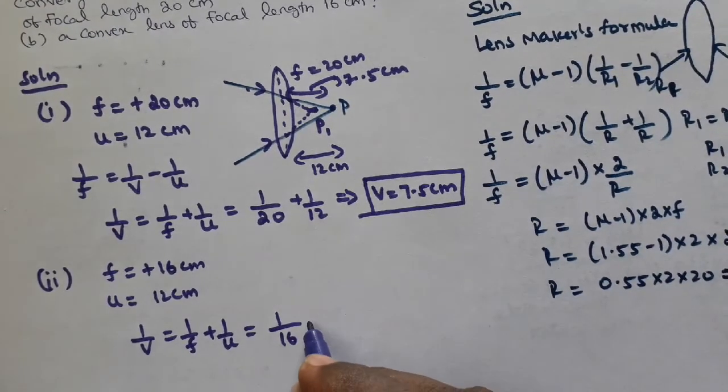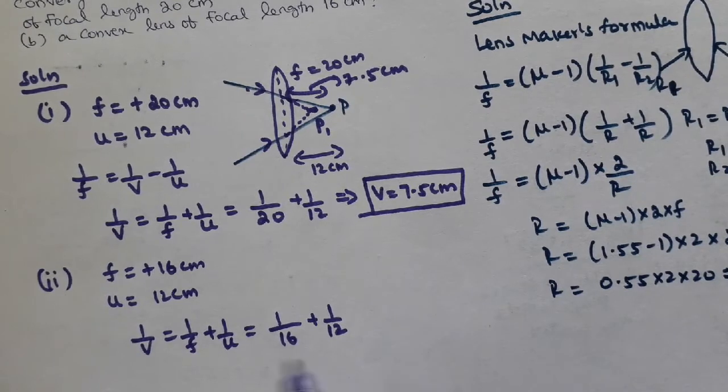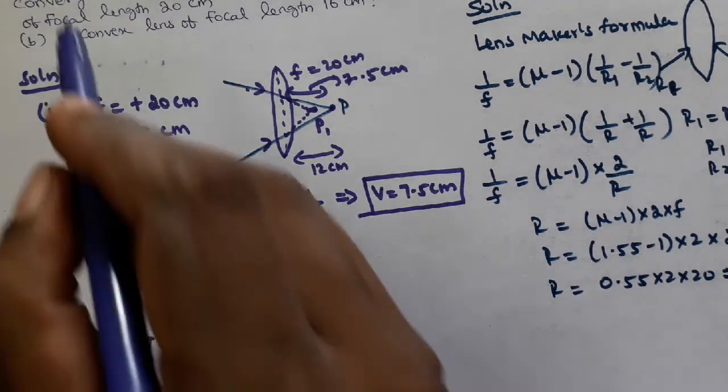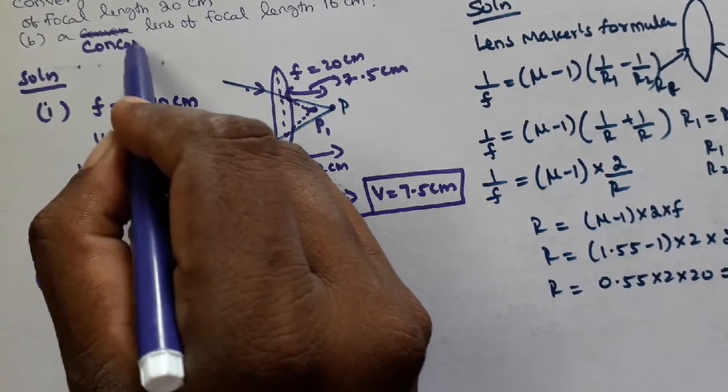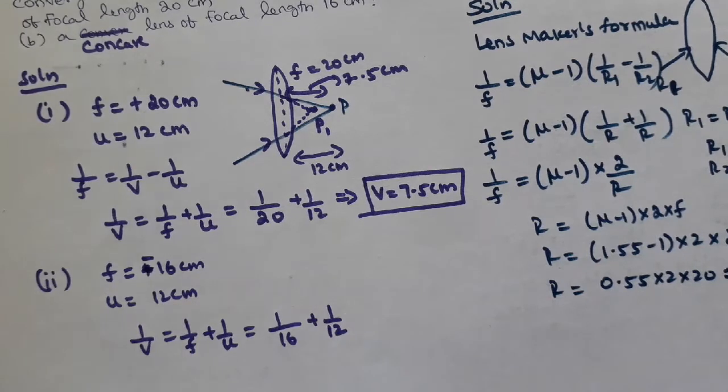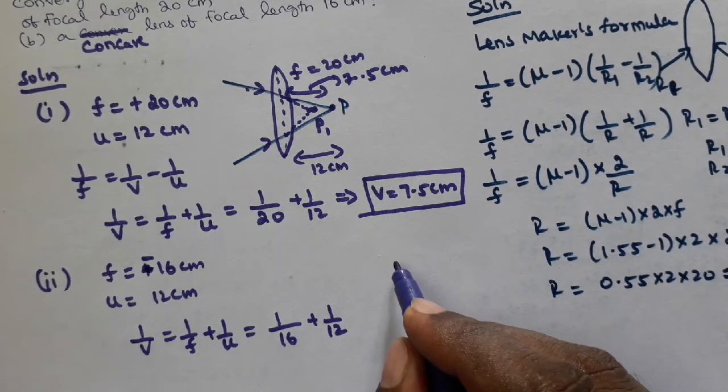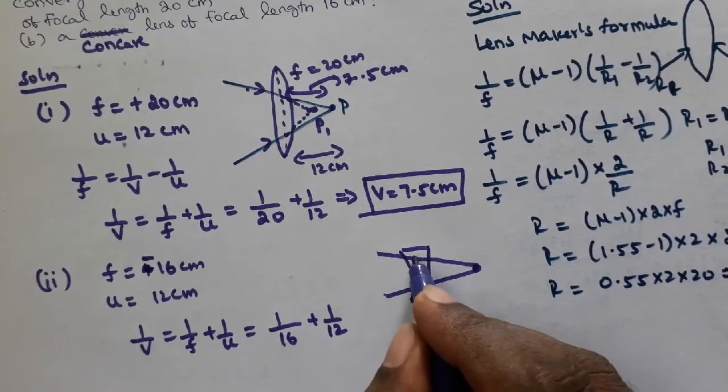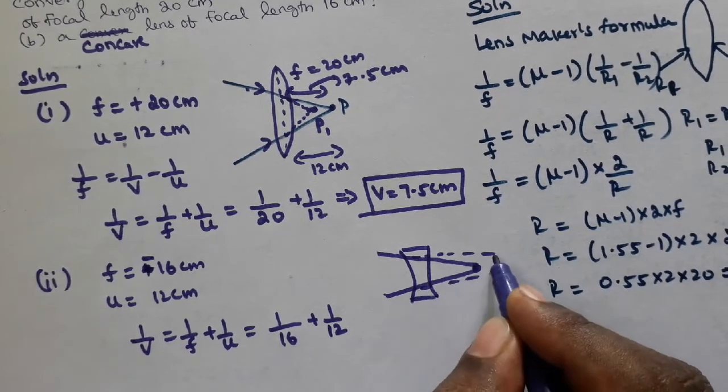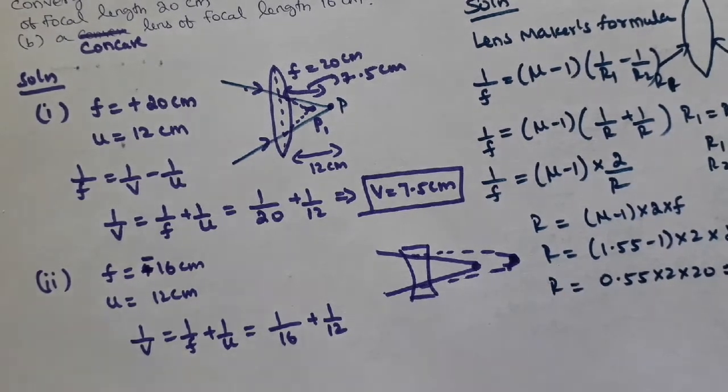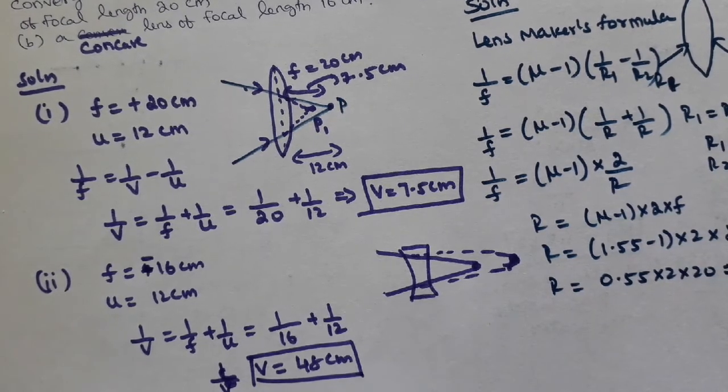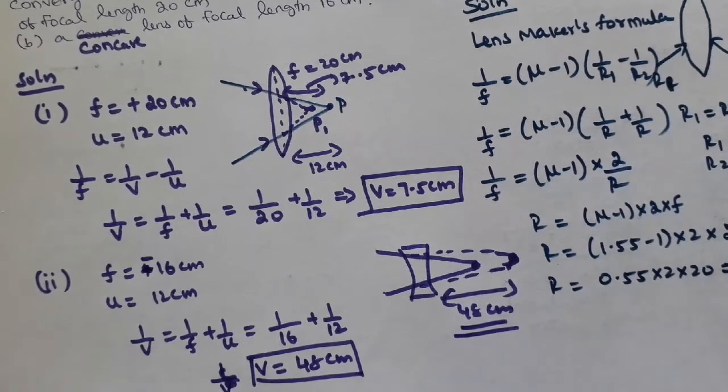Actually, the question asks about a concave lens, so focal length is negative. This is a diverging lens. So 1/V = 1/(-16) + 1/12. Calculating, V = 48 cm. So the image is at 48 cm from the lens. Thank you.